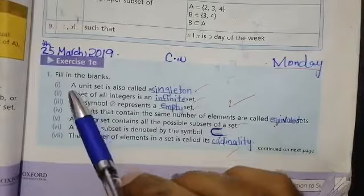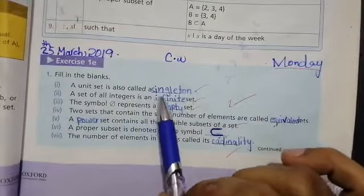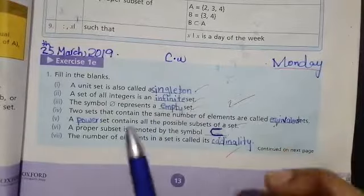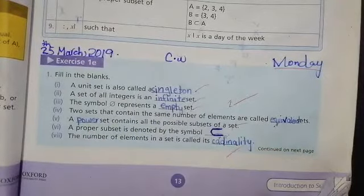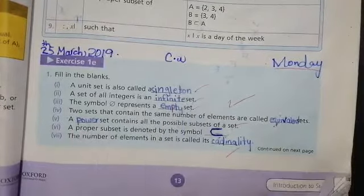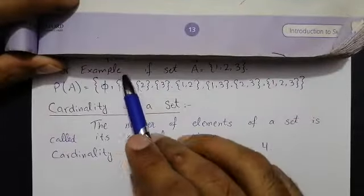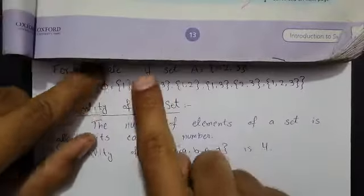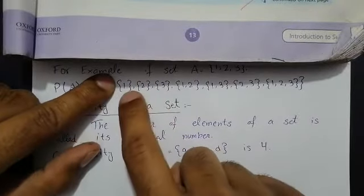The Unit set is also called a Singleton set. Unit set وہی ہوتا ہے جس میں ایک ہی element ہو۔ جیسے ایک set میں صرف ایک element ہو، تو وہ ایک Unit set ہے۔ اس کو Singleton set بھی کہتے ہیں۔ یہ آپ نے یہاں لکھ لینا۔